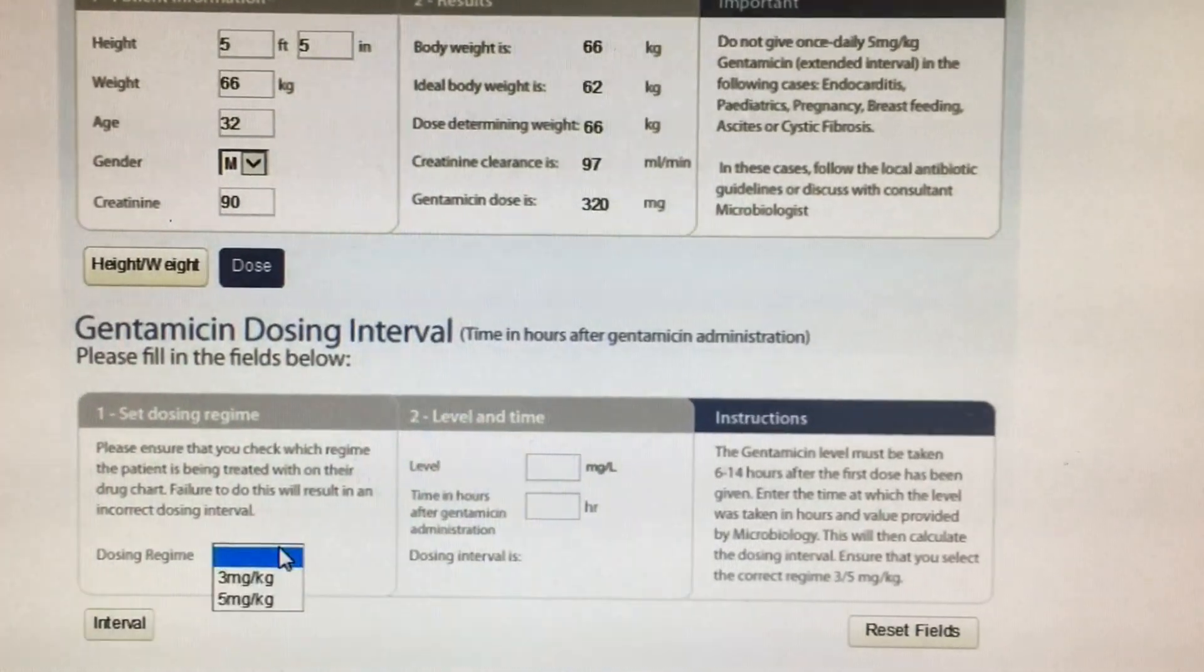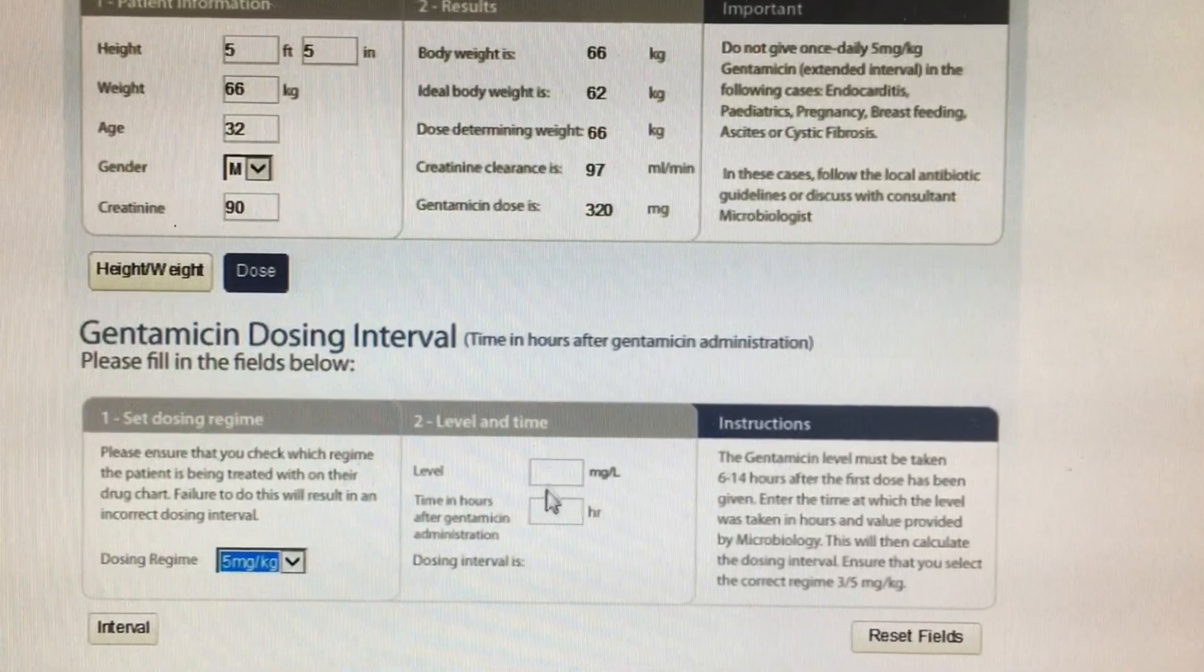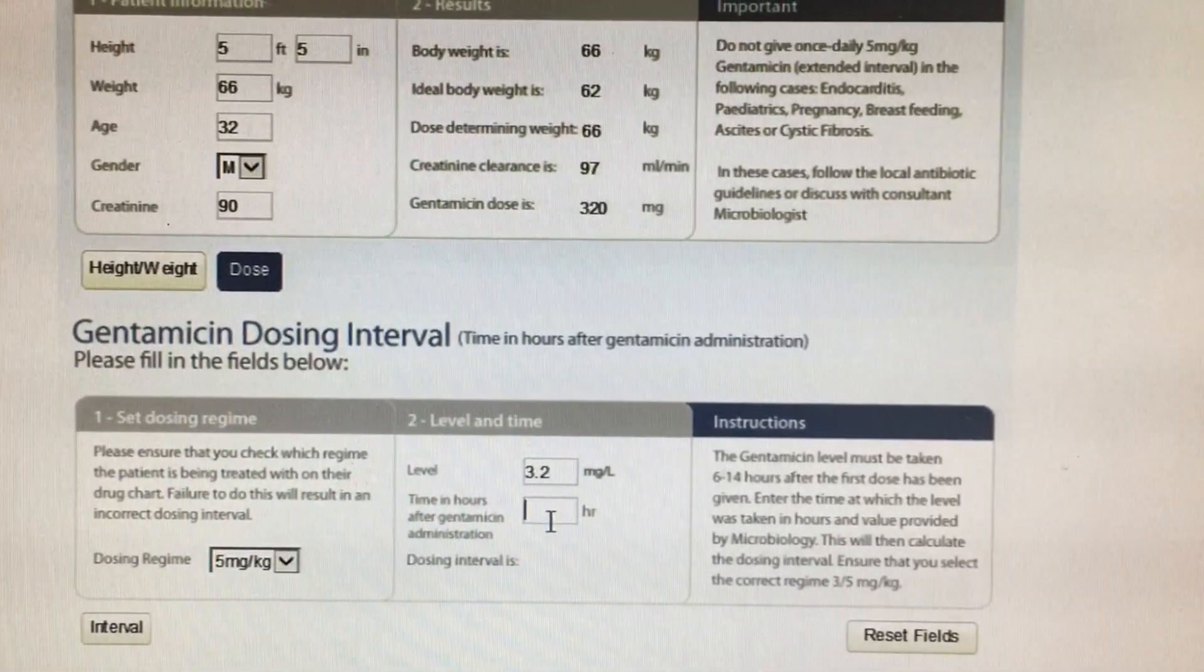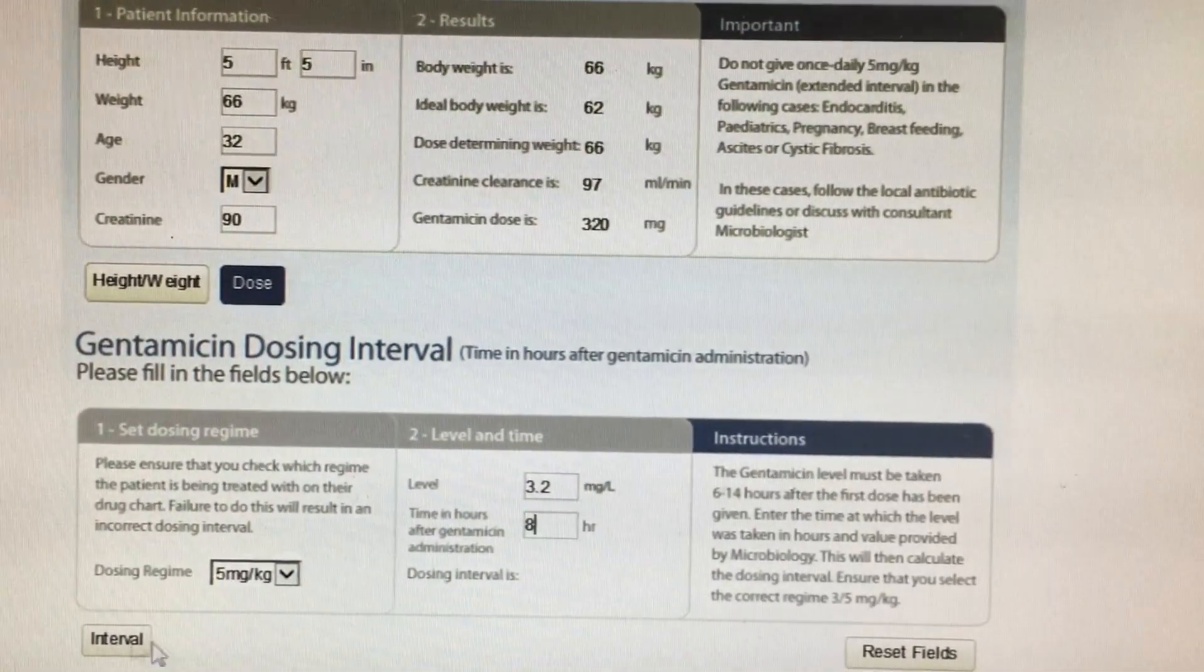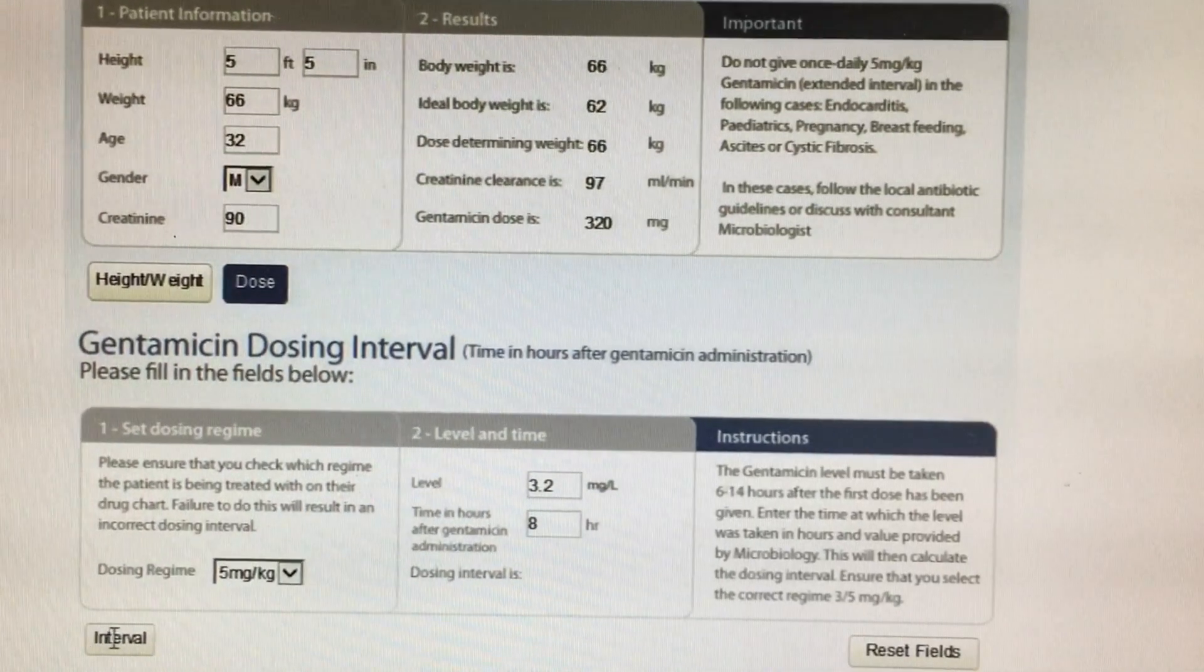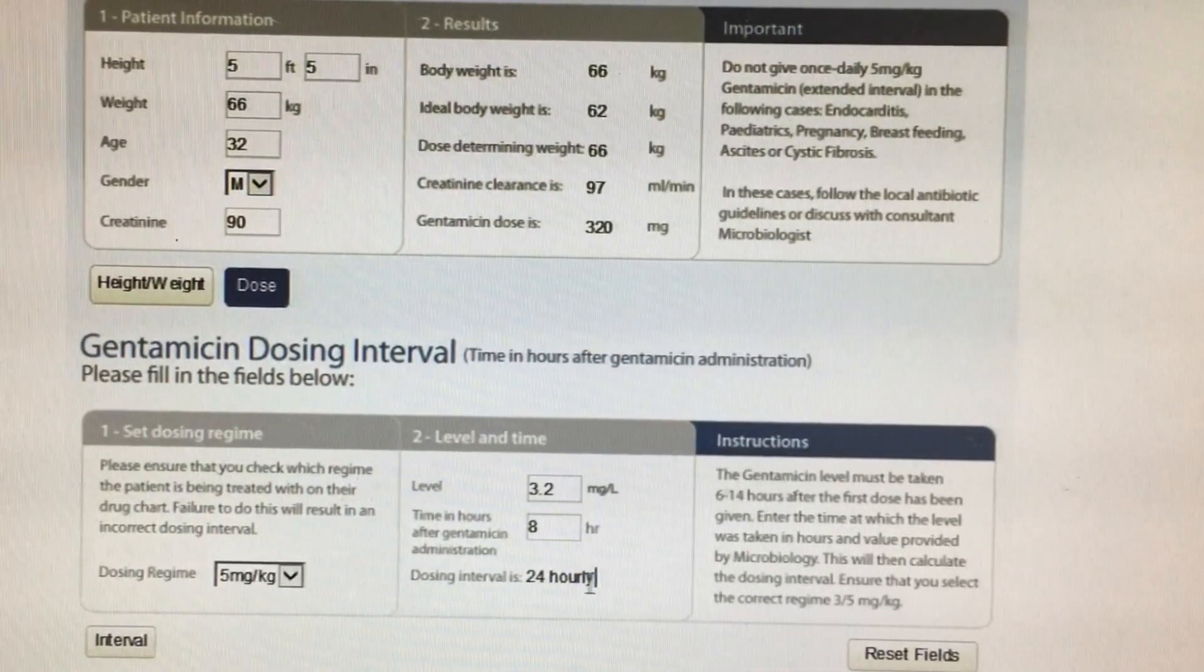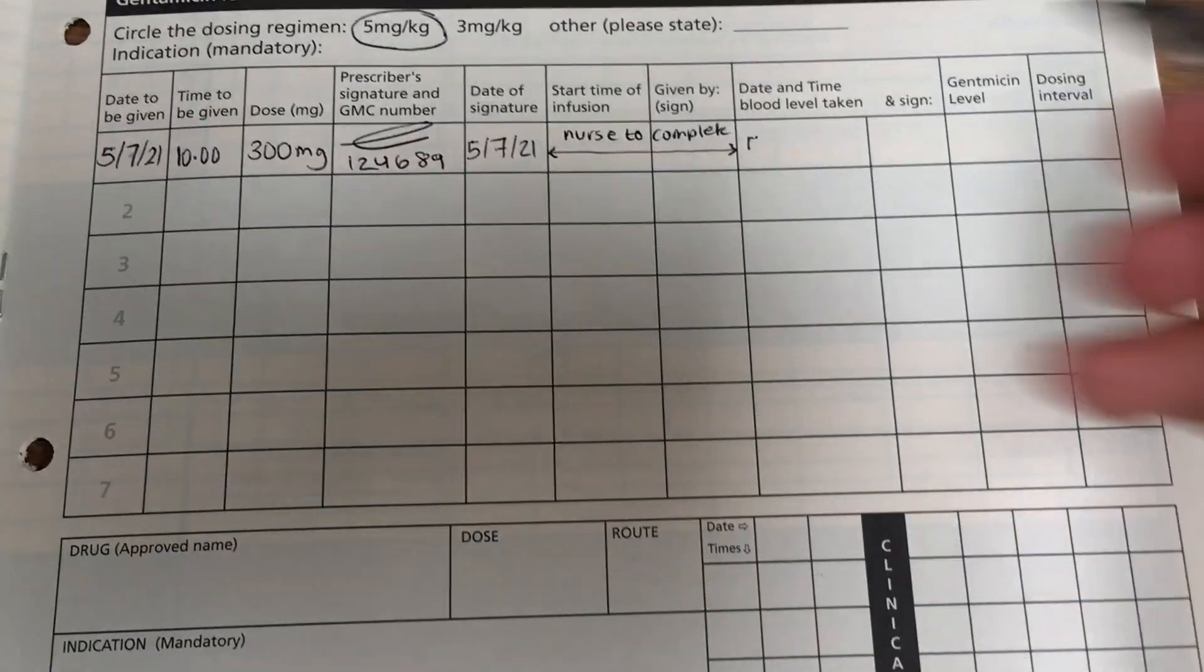So, the next bit is going to be the dosing interval. So, how often can you give these 320 milligrams? So, you put the dosing regime that you calculated, the level that you found from the blood test, and you put in the time difference between when the last dose was given, and when this level that you got from the blood test was collected. Click on interval, and this tells you that the patient can receive their next dose after 24 hours. Okay, so now we go back to the example.